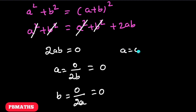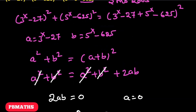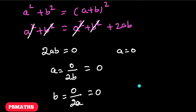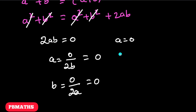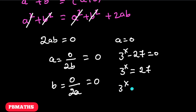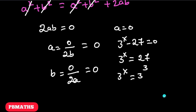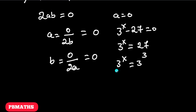So 2ab = 0 implies either a = 0 or b = 0. Taking a = 0: since a = 3^x − 27, we write 3^x − 27 = 0, so 3^x = 27 = 3³. Since the bases are equal, we equate the powers and get x = 3.